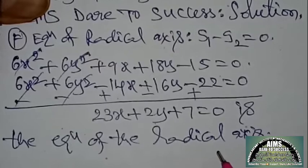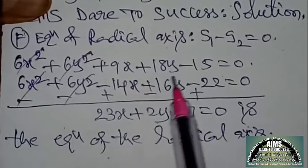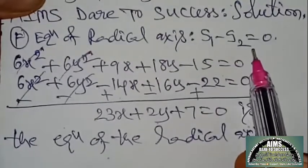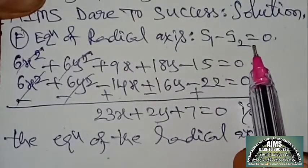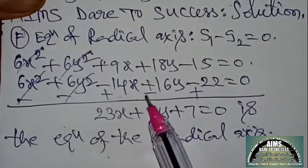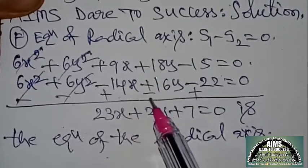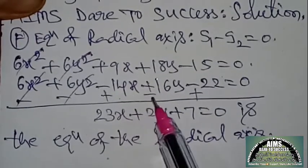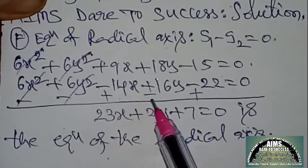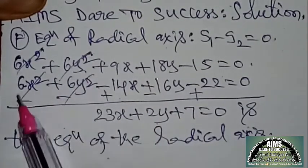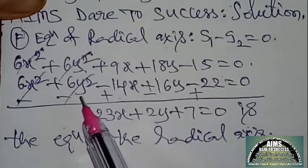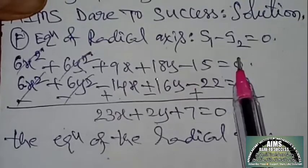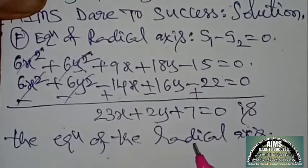While you are having x² and y² coefficients the same, you can directly take the equation of radical axis as S1 − S2 = 0. If they are not equal, you equate them by multiplying or dividing, so that x² and y² coefficients become the same. After getting that, S1 − S2 = 0.